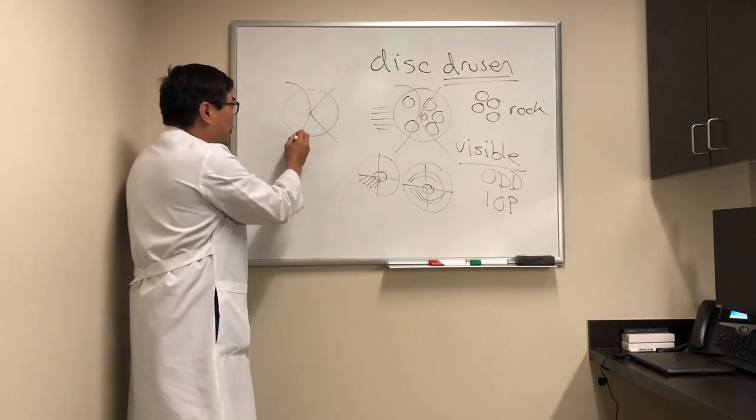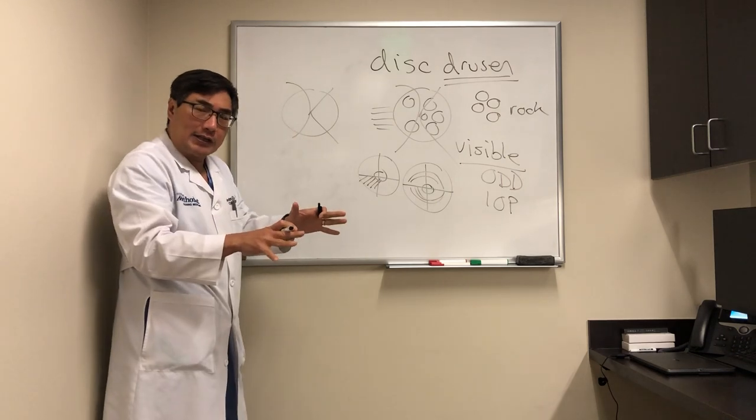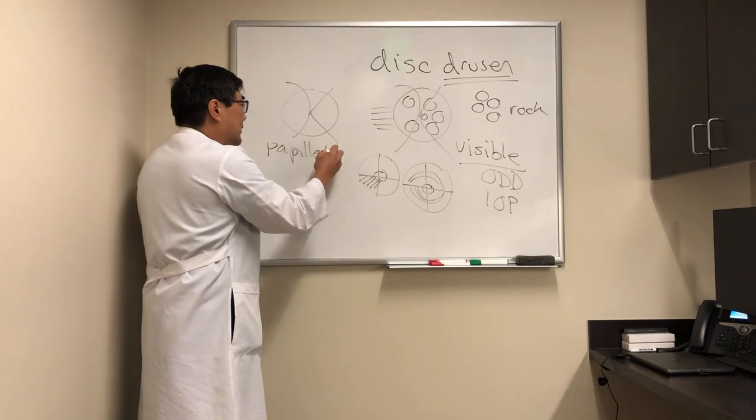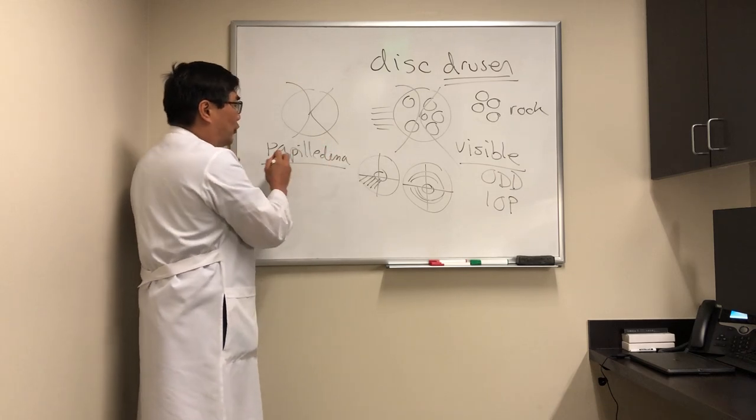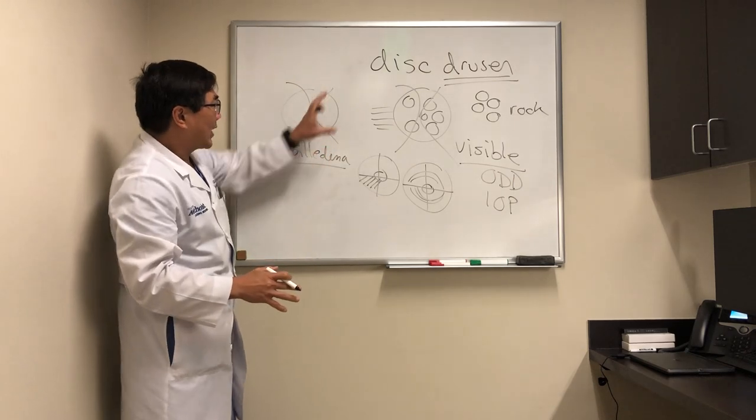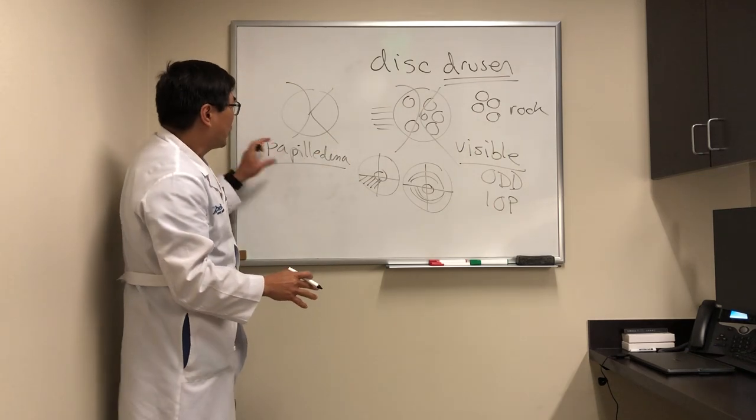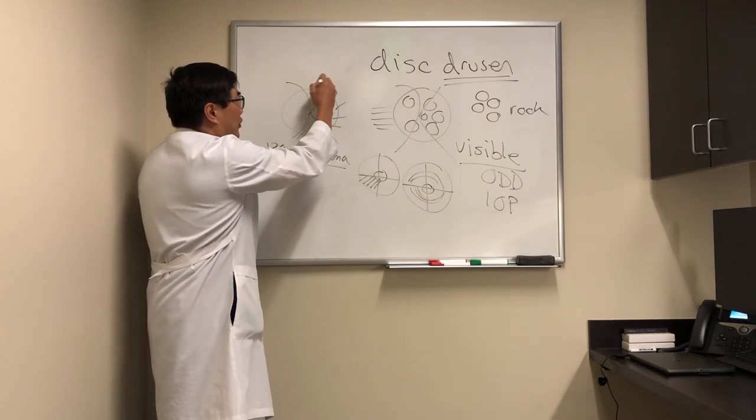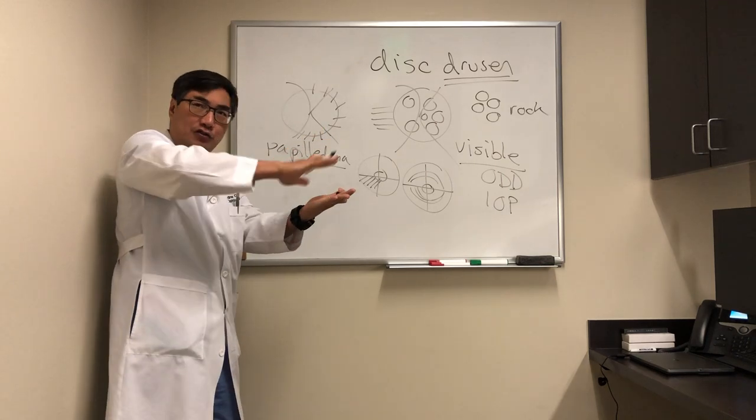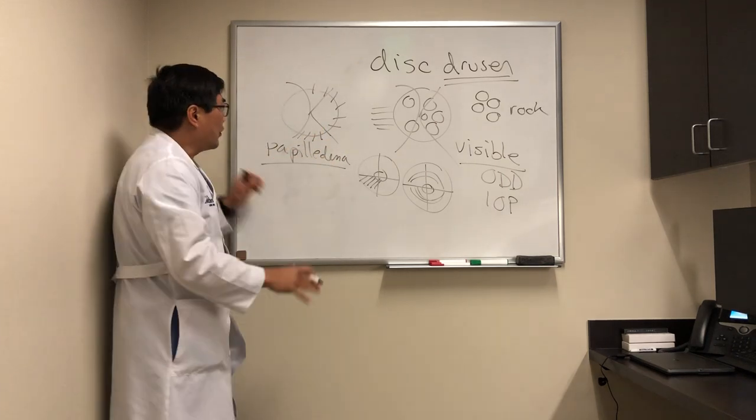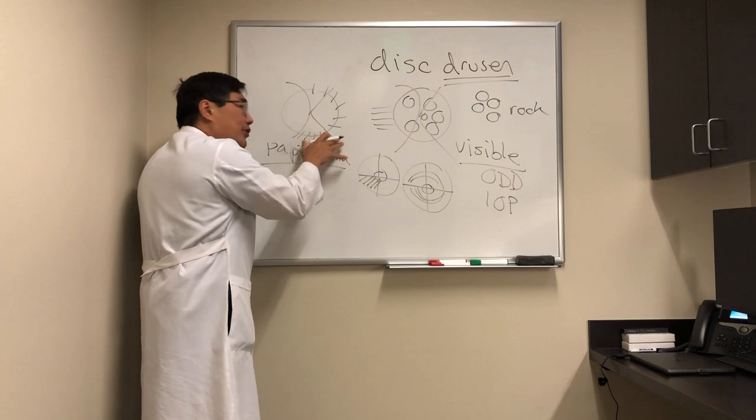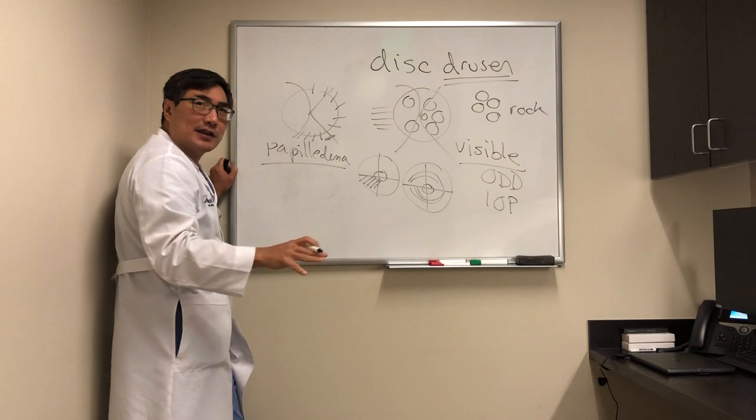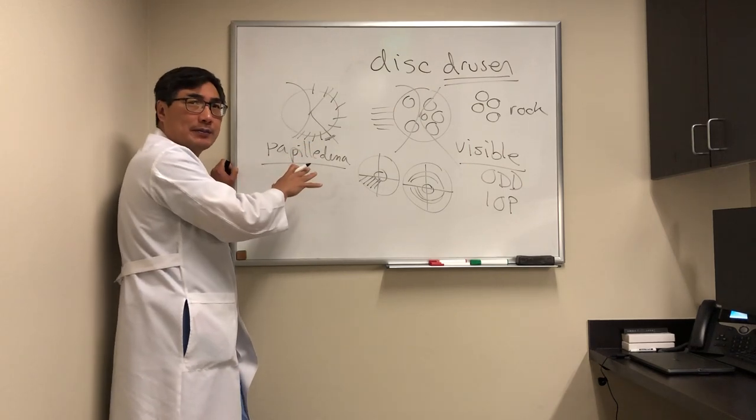And so we're going to be looking for the distinctive and obligatory signs of papilledema in any patient who has an elevated disc. And if we see the obligatory signs, then we're not going to be thinking about drusen. So the obligatory signs in papilledema are when you have obscuration of the nerve fiber layer, and that's on the surface rather than deep. So if we can see through the nerve fiber layer and see the vessels clearly, and if there's pigmentary change under the vessels, then that's going to be pseudopapilledema.